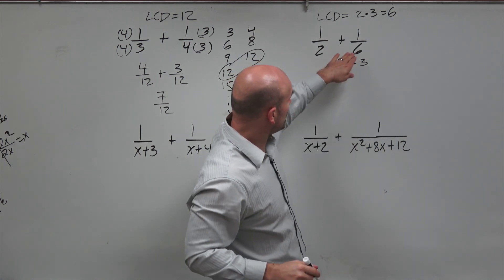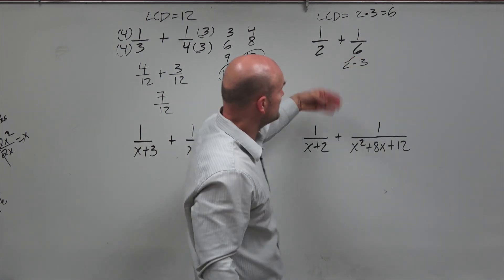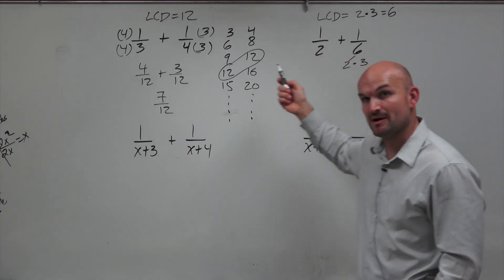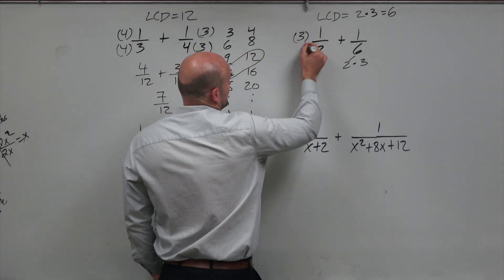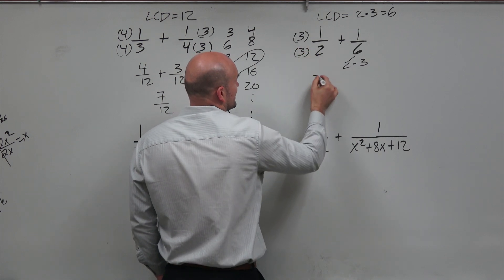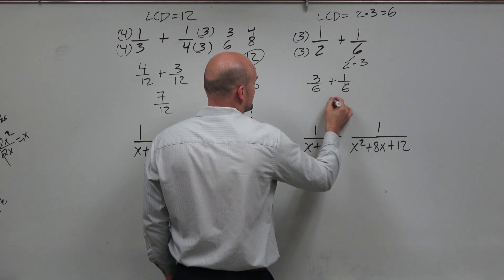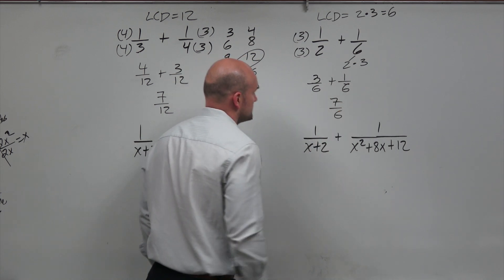Now, since we already have 1/6 over here, the only thing I need to do to obtain a common denominator is multiply this fraction by 3/3. So when I do that, I get 3/6. Then now I get 3/6 + 1/6, which equals 7/6.